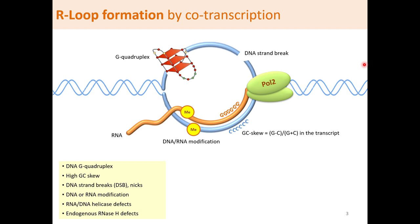The most important R-loops in gene regulation are those formed co-transcriptionally during gene transcription. Normally during transcription, the nascent short RNA transcript, about 8 to 10 nucleotides long, is hybridized with the DNA template but is continuously released from the DNA strand by the plug domain in the polymerase, preventing its re-hybridization with the DNA. However, under certain circumstances, RNA and double-stranded DNA can form stable R-loops by factors such as GC skew, G-quadruplex, DNA strand breaks, DNA or RNA modifications, or defects in helicases for duplex unwinding.